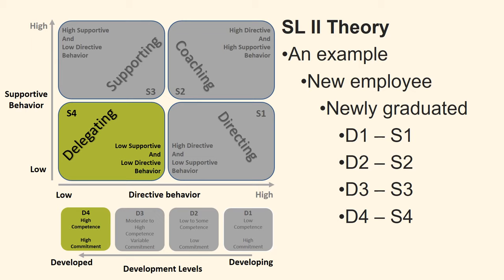A little further in the process, you find that the employee no longer consults you and is confident in his choices. The employee has gained more confidence and their selection of solutions impresses you. You now see the employee as being at development level D4 and therefore choose leadership style S4. You delegate more competence and responsibility to the employee, recognize their expertise, and use the employee for difficult tasks so they are challenged and not bored.